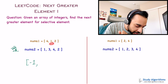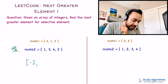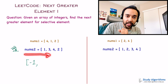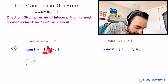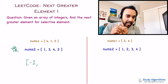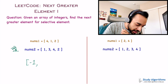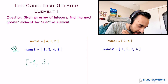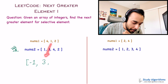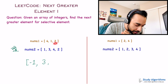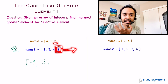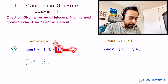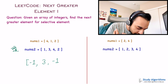Next, let us look at element 1. If you see element 1 in your second array and start looking to the right, what is the next greater element? Going to the right of 1, you see that 3 is the next greater element. So you write down 3 as the next greater element for element 1. Next, you have element 2. When you look at element 2, you cannot find any greater element to the right, so once again the answer is minus 1.